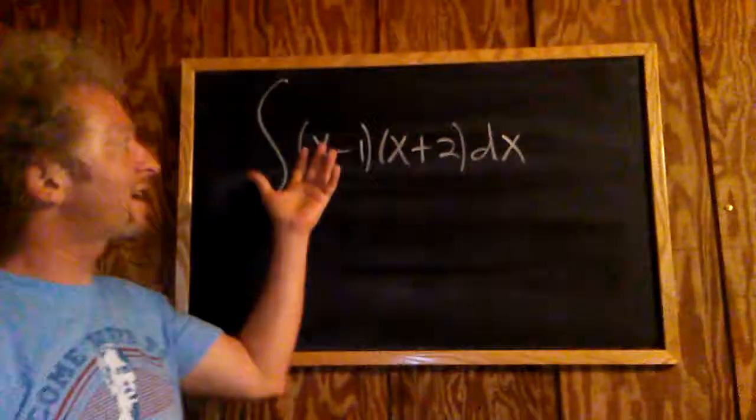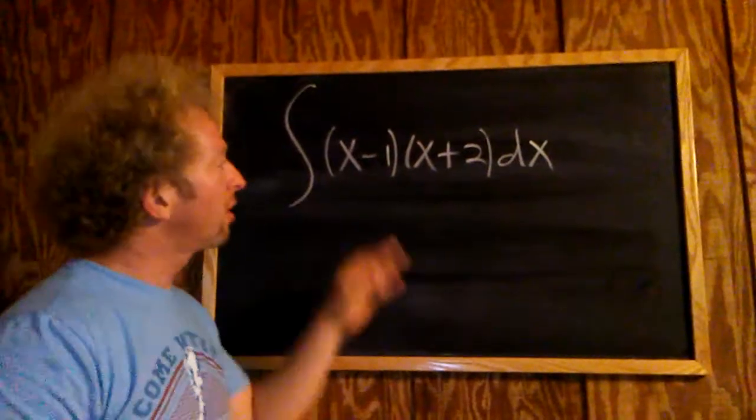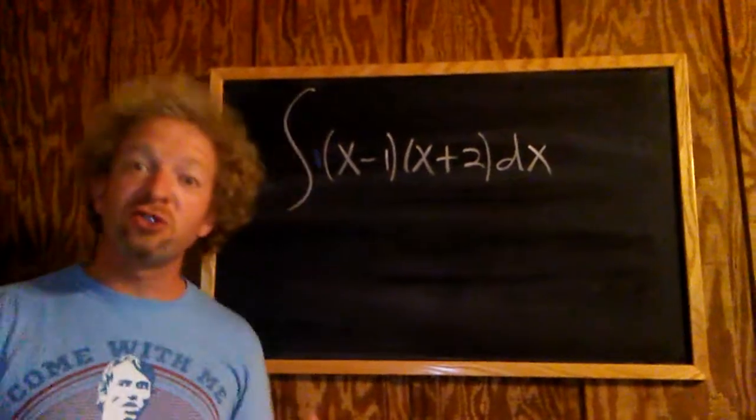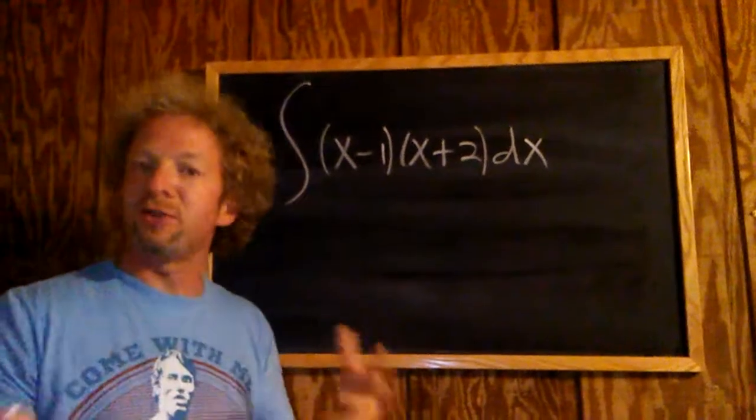We're going to integrate x minus 1 times x plus 2 with respect to x. So we have a product. Unfortunately, there is no product rule for integrals. So the way to do this is to simply multiply everything out and then integrate using the power rule.